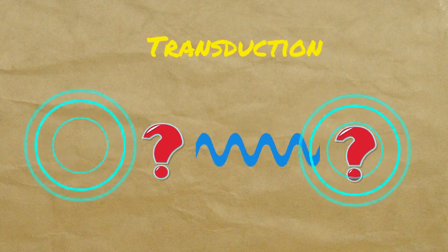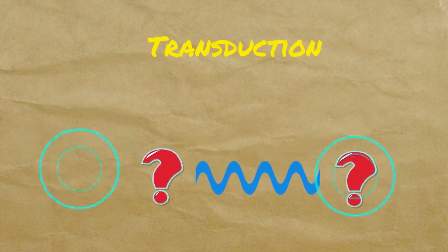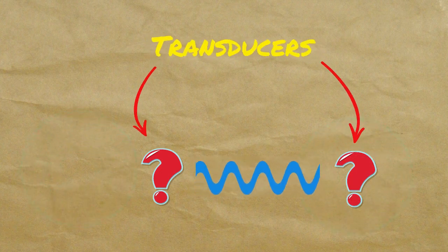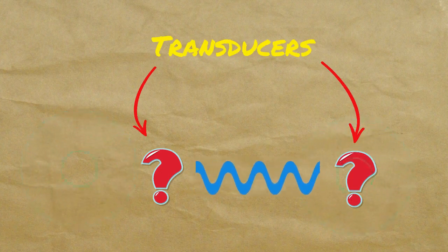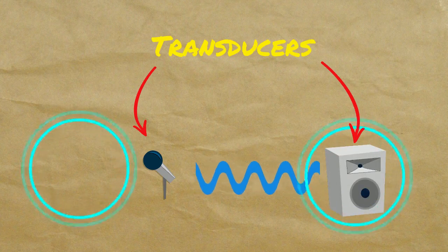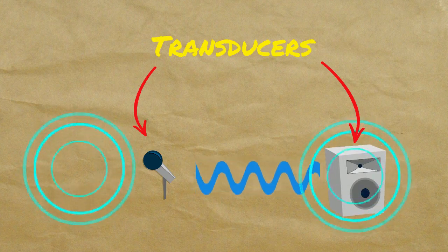This process of converting acoustic or sound energy into electrical energy or vice versa is called transduction, and the devices that perform these functions are called transducers. More directly, devices that convert acoustic energy to electrical energy are called microphones, and devices that convert electrical energy to acoustic energy are called speakers.